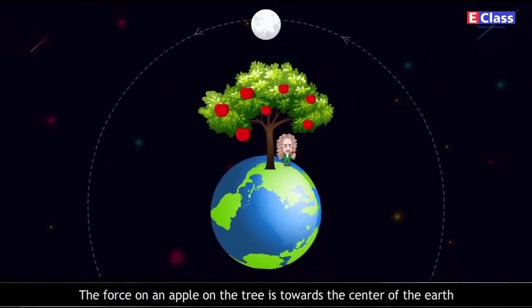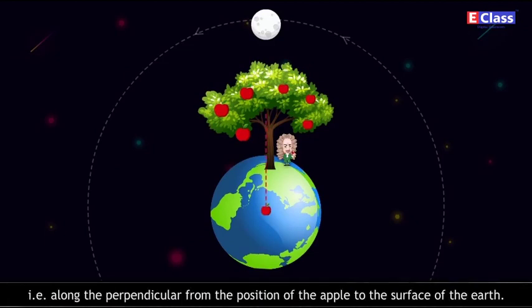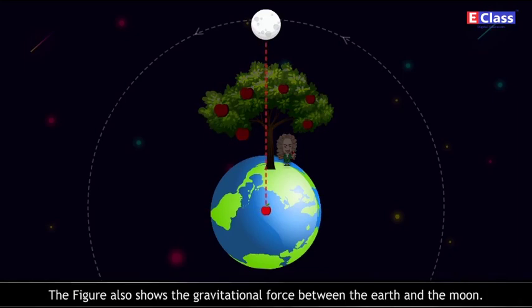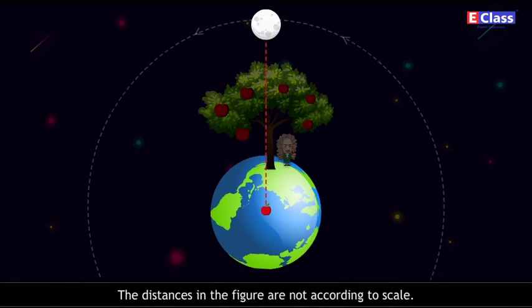The force on an apple on the tree is towards the center of the earth, that is along the perpendicular from the position of the apple to the surface of the earth. The figure also shows the gravitational force between the earth and the moon. The distances in the figure are not according to scale.